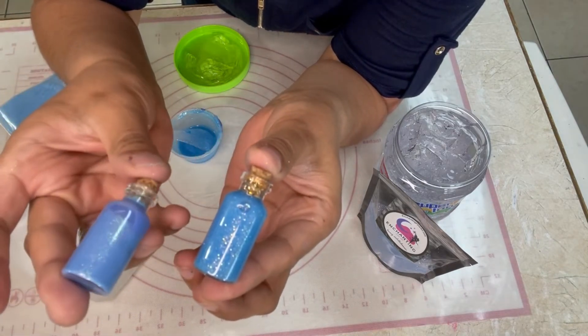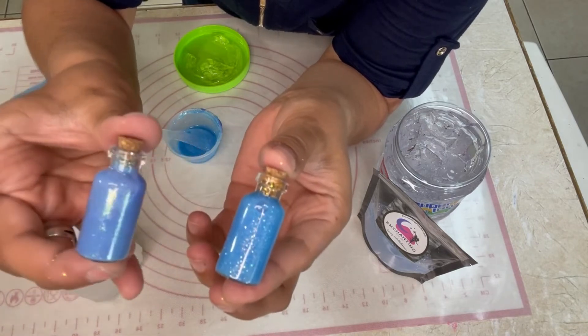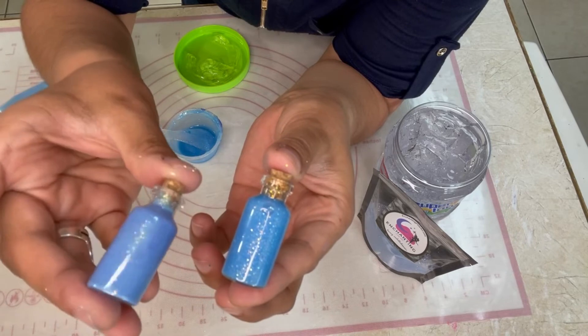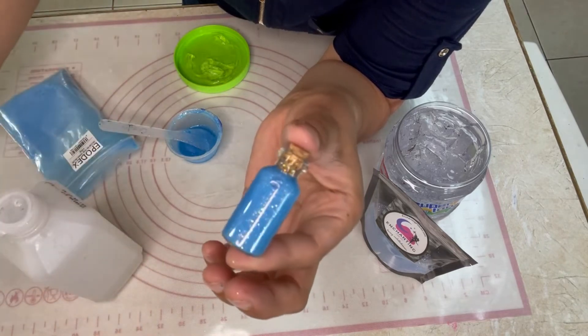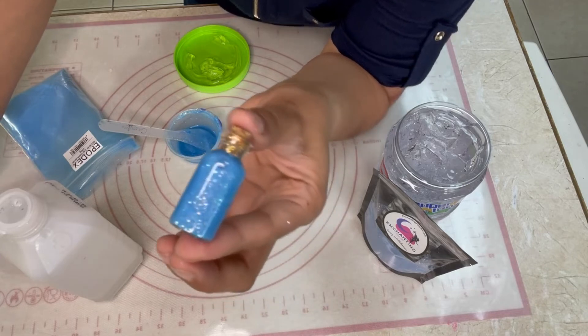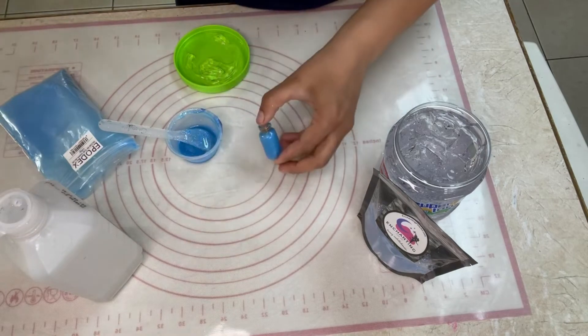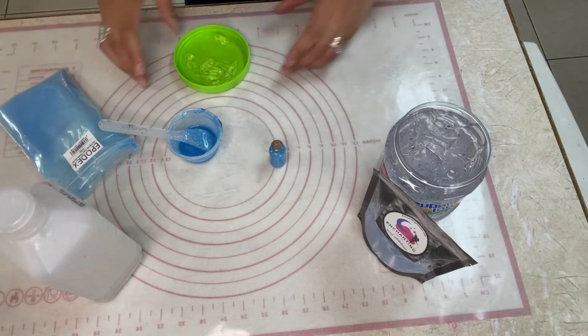and then you add a little bit of the E6000 glue on the cork and just put that right inside of the bottle. And just leave it there for a few hours until it dries completely and your bottle will be nice and sealed and ready to go.